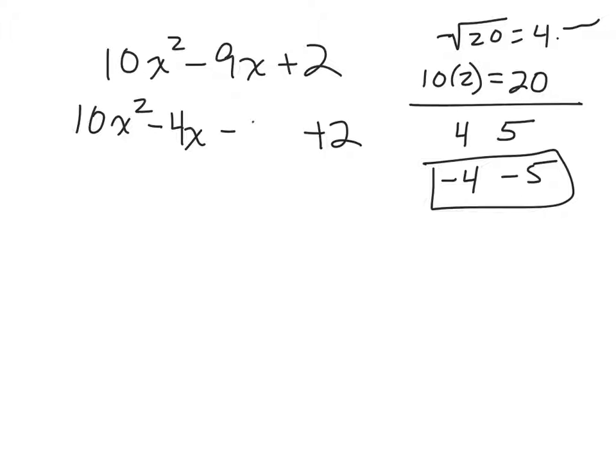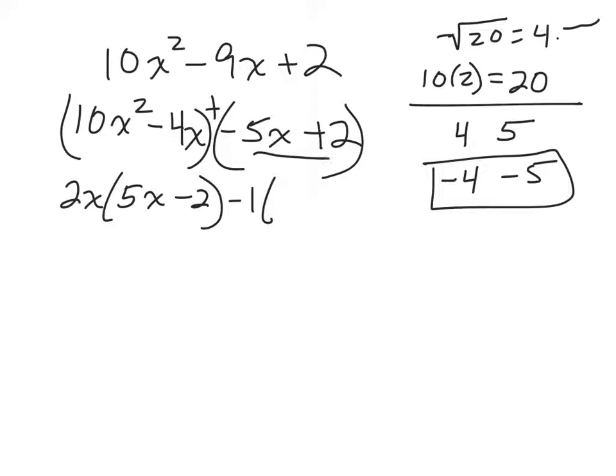So we got the combo that we needed right off the bat on this problem. So we'll slip a negative 4x in there and a negative 5x in here. And then we'll do grouping, because now we've got 4 terms. So group the first two, group the last two. 2x out of 10x squared minus 4x would be 5x minus 2. Now, out of 5 and 2, all you could factor out is a 1. But to get the signs to flip, we're going to want to factor out a negative 1, so that we can get this to be 5x minus 2 in here and match our other parenthesis. A factor of 5x minus 2 and a factor of 2x minus 1.